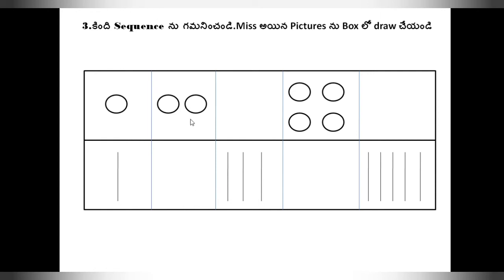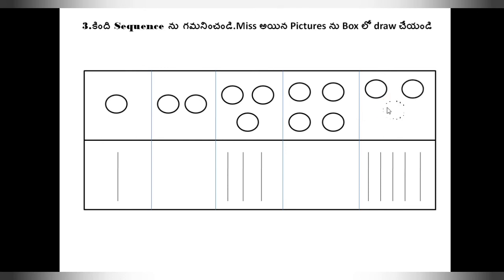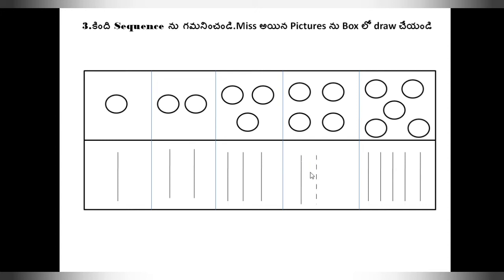Here 1 circle is there, 2 circles are there. Here we have to draw — how many circles? 3. Just see here: 1, 2, 3. Here is 4. Next we have to draw here 5: 1, 2, 3, 4, 5. Next, here only 1. Again here we draw 2 lines: 1, 2. Here we have to draw 4 lines: 1, 2, 3, 4.